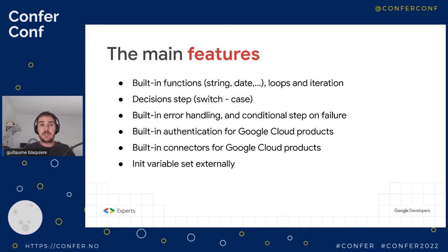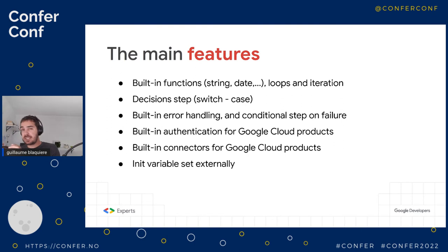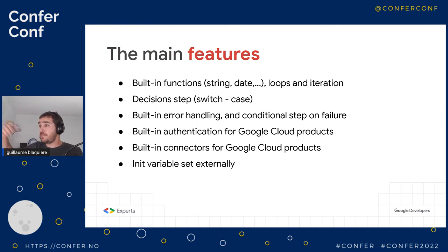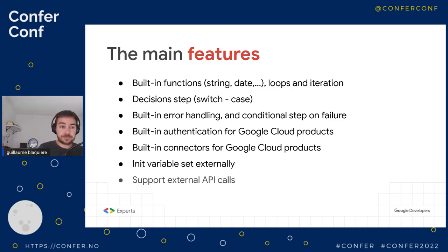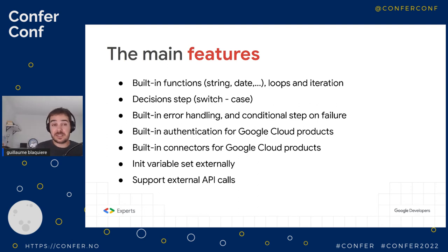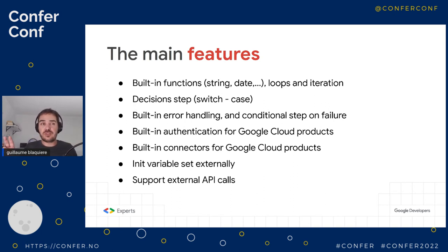Another powerful feature is the ability to reuse results from a previous step in subsequent steps. For example, you can perform an API call to get the weather in a city, then inject that result into BigQuery if you want to log it. You can reuse the previous step's result very easily. And because you can call APIs, you can call internal or external APIs — like a weather API. For external APIs, built-in authentication isn't supported, but you can add the required headers manually.